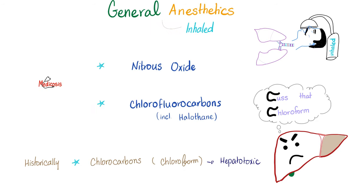Inhaled general anesthetics include nitrous oxide — the first anesthetic discovered in history — and the chlorofluorocarbons, including halothane, isoflurane, enflurane, desflurane, sevoflurane, etc. Historically, we had chlorocarbons such as chloroform, but they were found to be hepatotoxic, cardiotoxic, and toxic to the lungs, so we stopped using them.